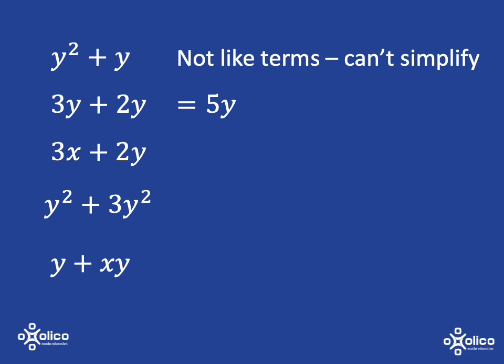3X plus 2Y, that one, they're not like terms. You can't simplify because it's like you've got the three reds and the two yellows, you can't simplify. The next one, you've got one of those yellow squares plus three of those yellow squares. You've got four yellow squares in total, an area that is the size of four yellow squares.